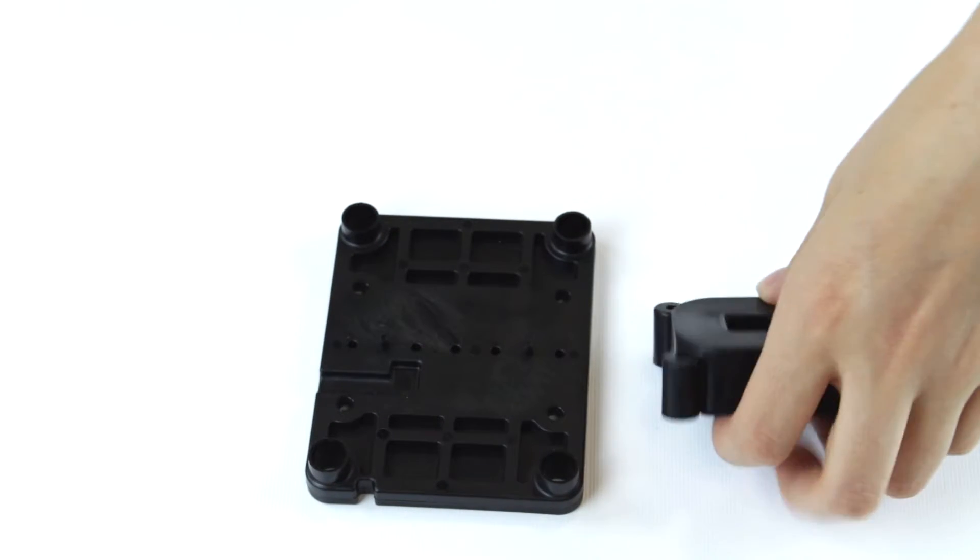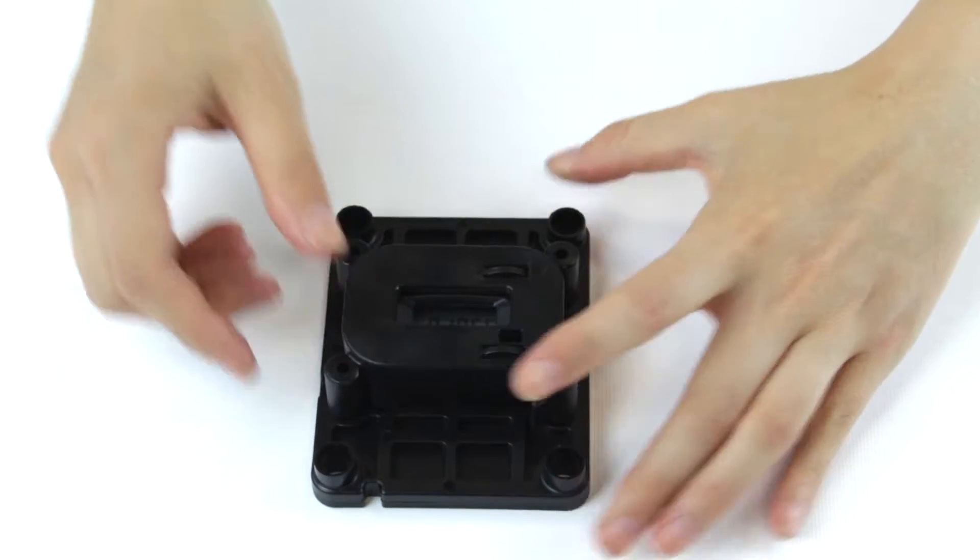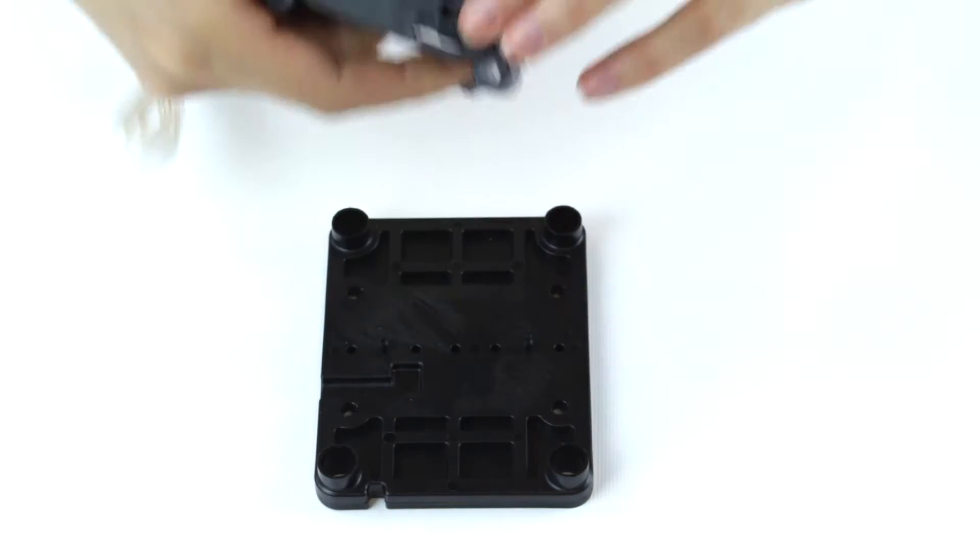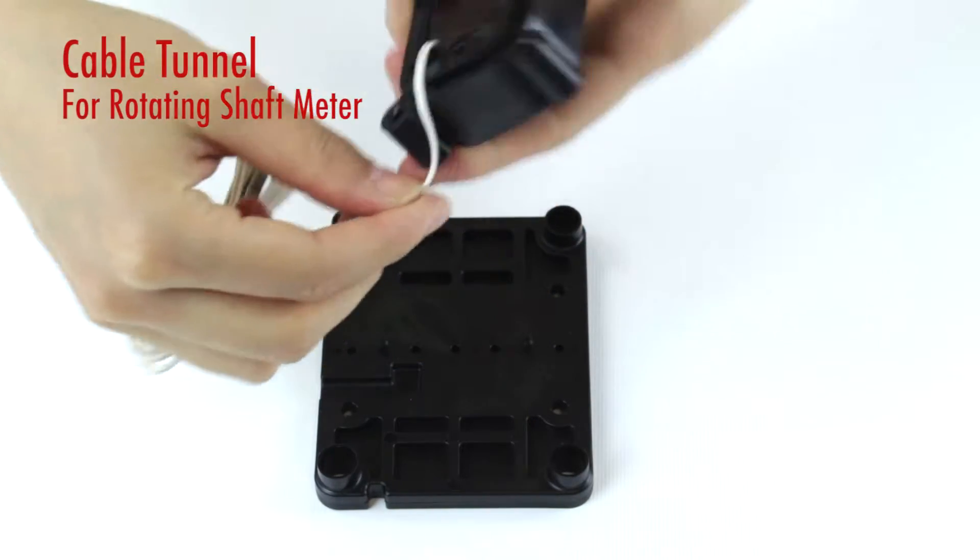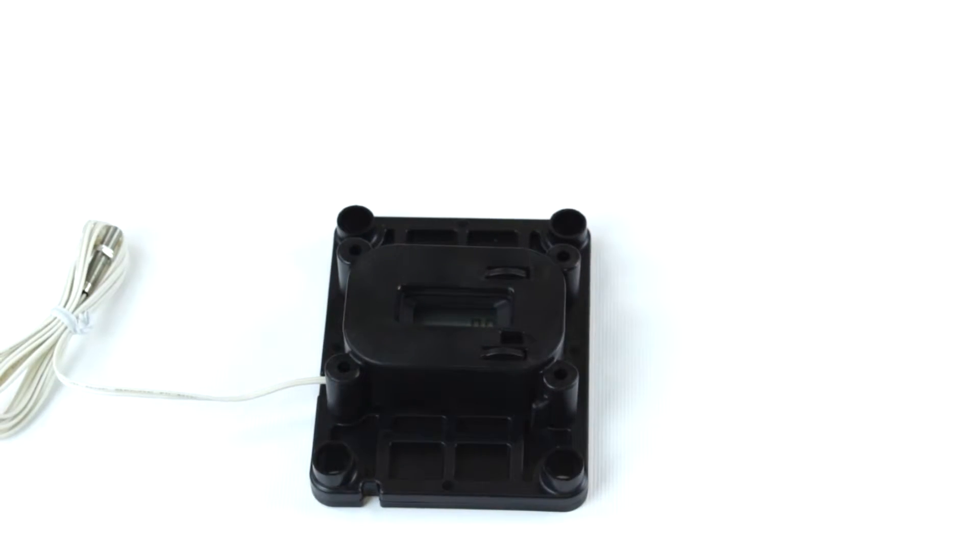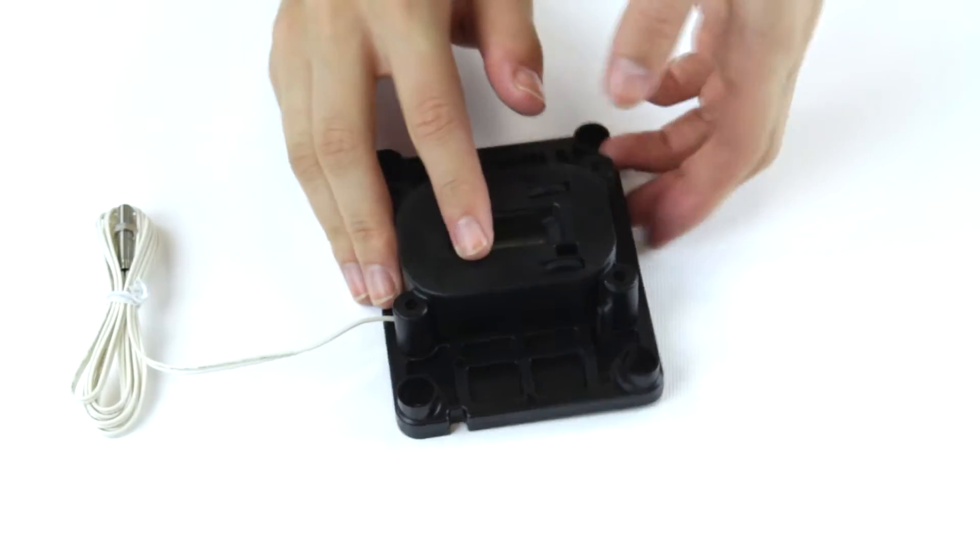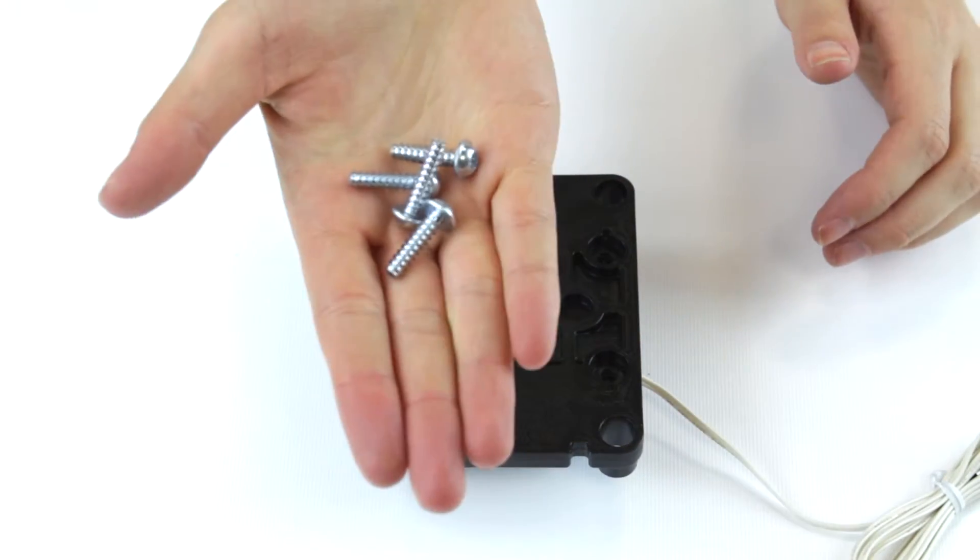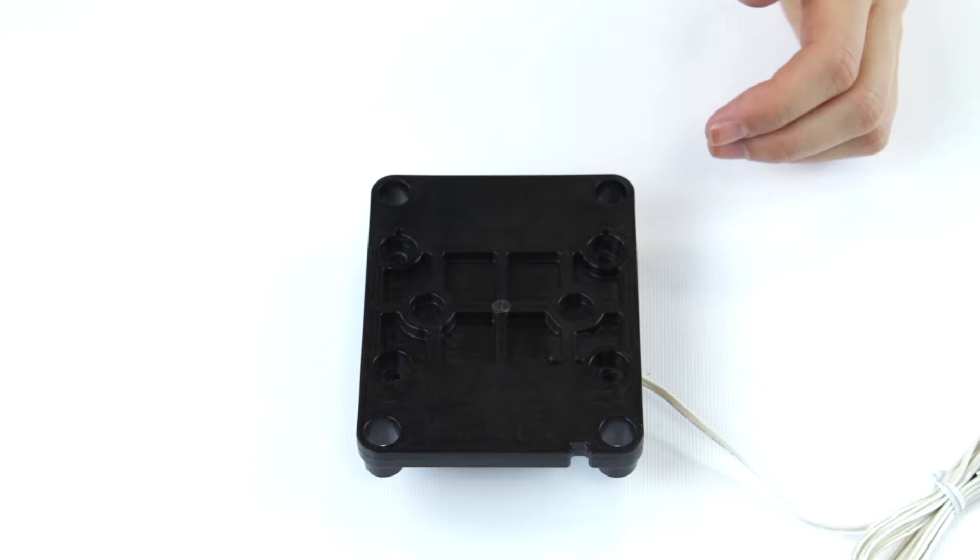Step 2. Place the meter cage components on the base plate. Make sure that the wire can go through the cable tunnel. Now fix the meter cage on the base plate. Therefore you can use the included torque screws. Make sure that you lock them tight.